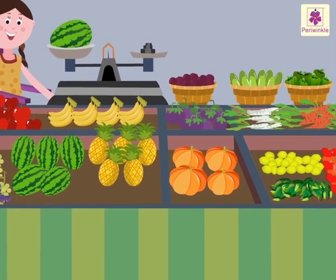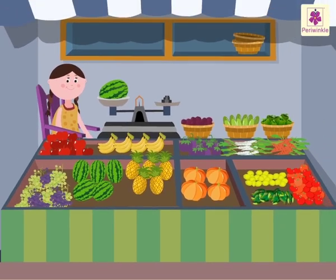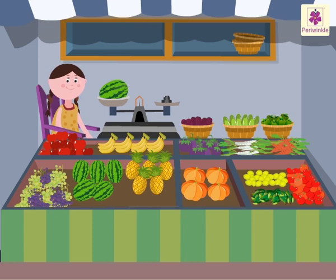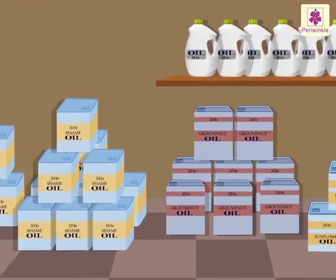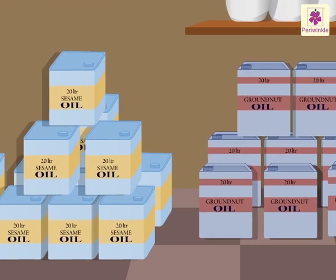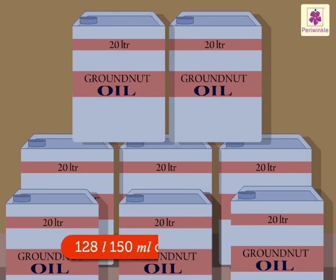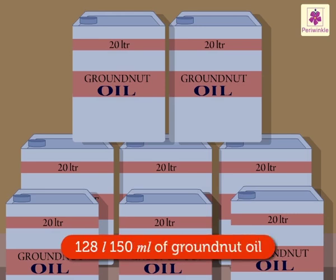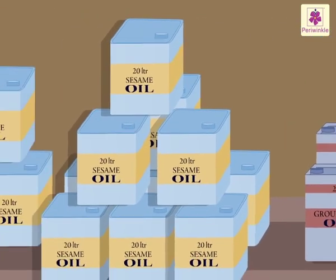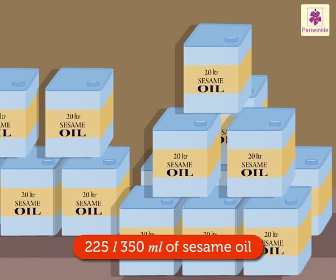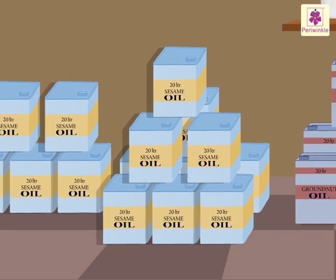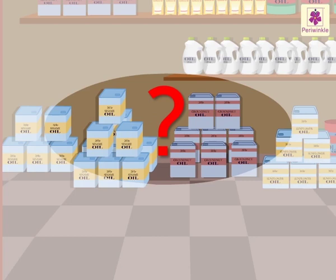We got the answer. Now, let us try to solve a subtraction story. Look, we are at an oil depot. There are so many different kinds of oil. There are 128 litres 150 millilitres of groundnut oil and 225 litres 350 millilitres of sesame oil. Which oil is more and by how much?